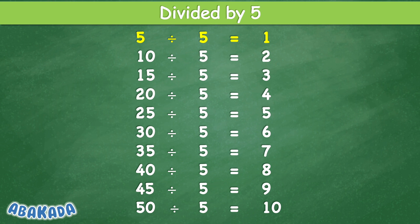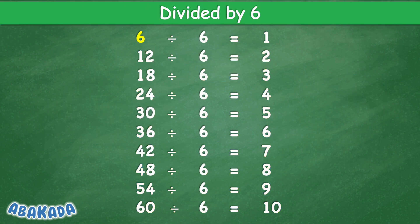Divided by 5: 5 divided by 5 equal 1, 10 divided by 5 equal 2, 15 divided by 5 equal 3, 20 divided by 5 equal 4, 25 divided by 5 equal 5, 30 divided by 5 equal 6, 35 divided by 5 equal 7, 40 divided by 5 equal 8, 45 divided by 5 equal 9, 50 divided by 5 equal 10.